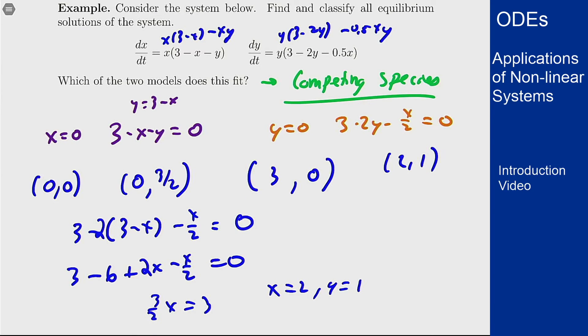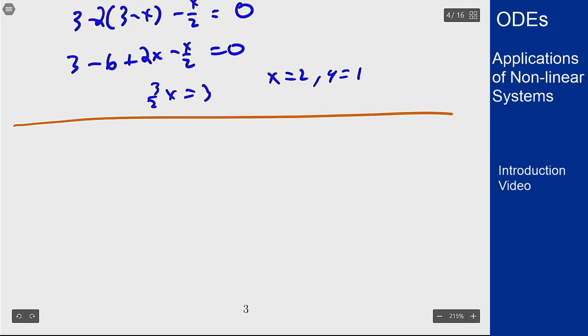Now to classify these, I need to find linearization and see what that looks like. I'll do that four times, one for each solution here. So let's start by taking all the derivatives we need, and then we'll plug in the points when we need them. So we're calling f(x,y) to be the x derivative, so x(3 minus x minus y), and then g to be the y derivative, which is y(3 minus 2y minus 0.5x). We can find the derivatives we need.